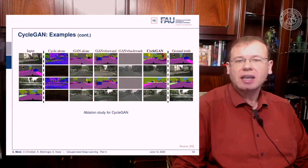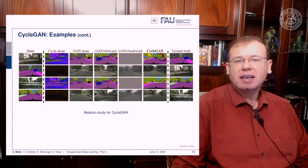Here we have an ablation study for the cycle GAN where you show the cycle GAN alone, the GAN alone loss, the GAN plus forward, GAN plus backward, and the complete cycle GAN loss. You can see that with the cycle GAN loss you get much better back-and-forth translations if you compare this to the respective ground truth.